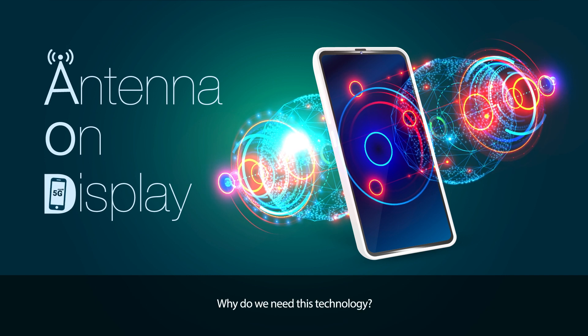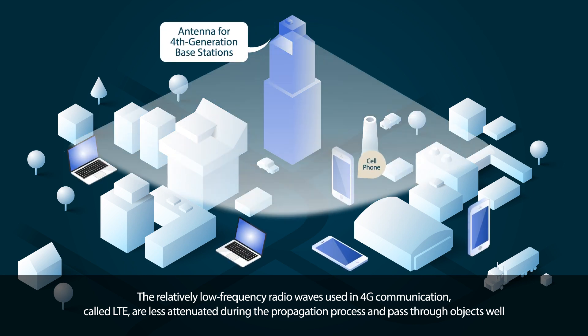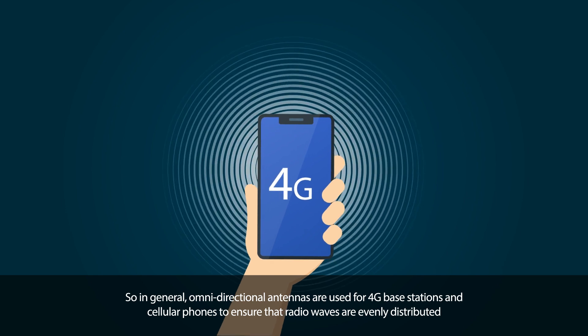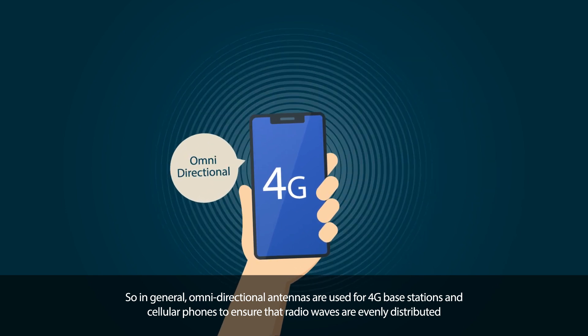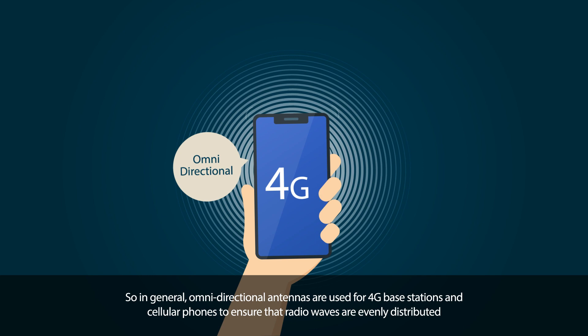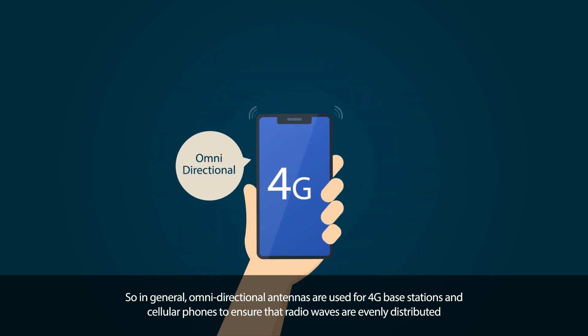Why do we need this technology? The relatively low frequency radio waves used in 4G communication, called LTE, are less attenuated during the propagation process and pass through objects well. So in general, omnidirectional antennas are used for 4G base stations and cellular phones to ensure that radio waves are evenly distributed.